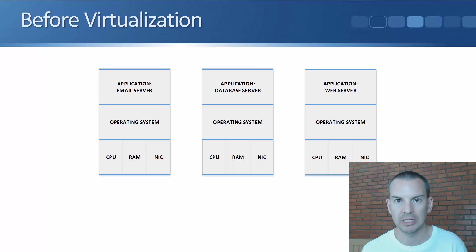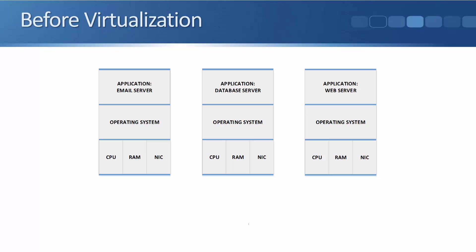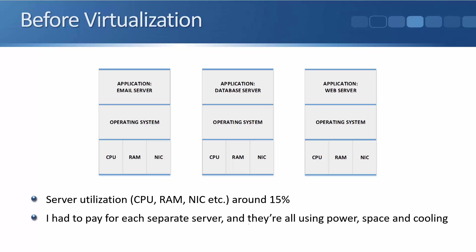When we do it like this, the server utilization leaves a lot to be desired. Server utilization means how busy the CPU, RAM, NIC, and other hardware components are. Typically when you're running a single application on a server like this, it's running at maybe around 15% utilization, which obviously is not very cost efficient — particularly as we had to pay for each individual server.